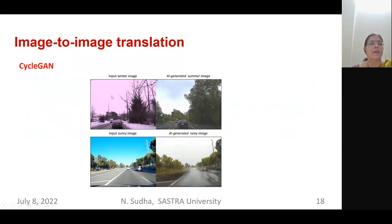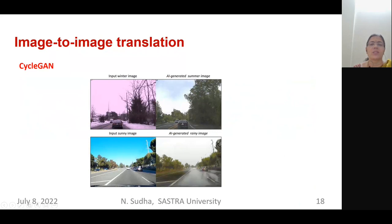Example results from CycleGAN include converting a winter scene image to a summer scene image — training with unpaired winter and summer images so the network learns what winter and summer look like. Similarly, you can convert a sunny road image to a rainy road image and vice versa.